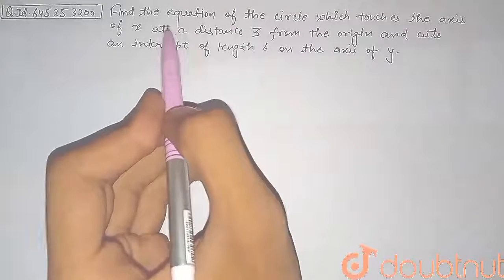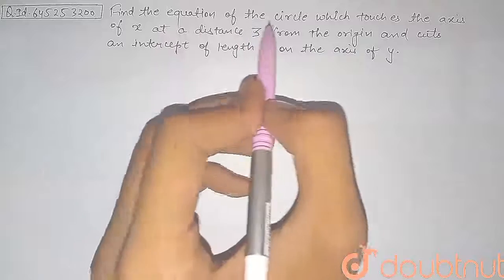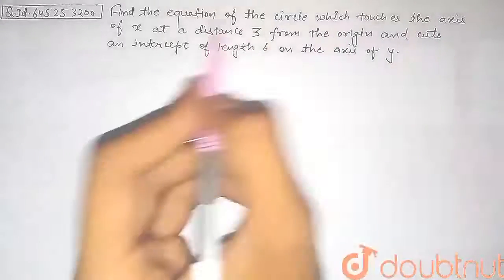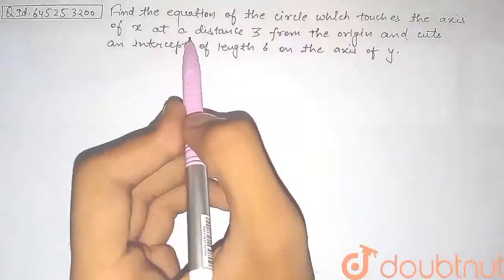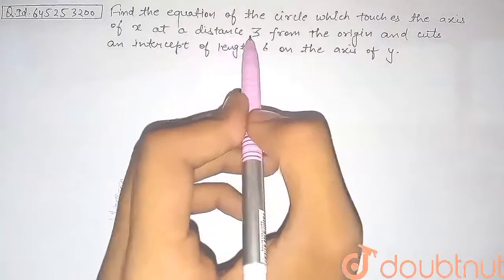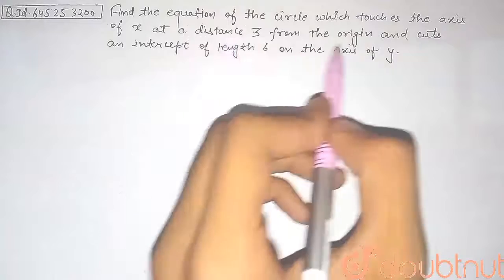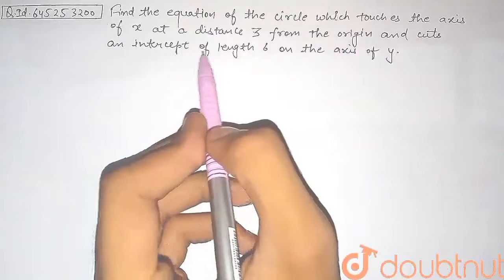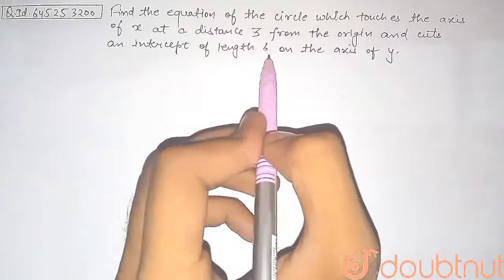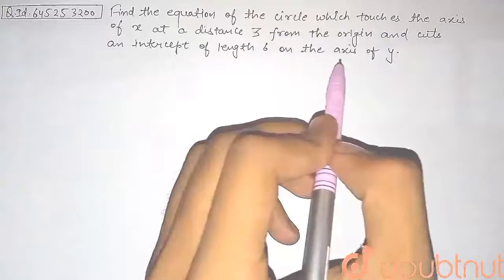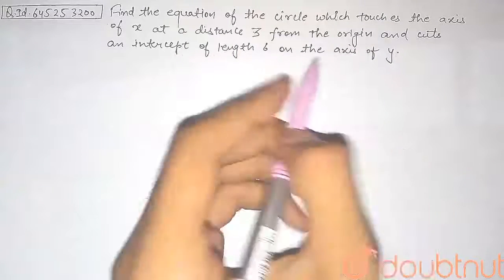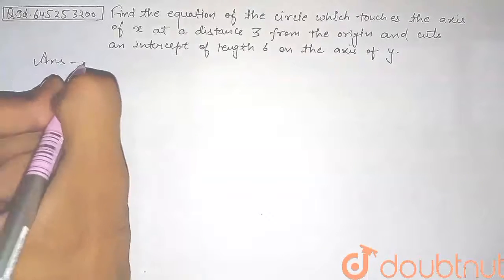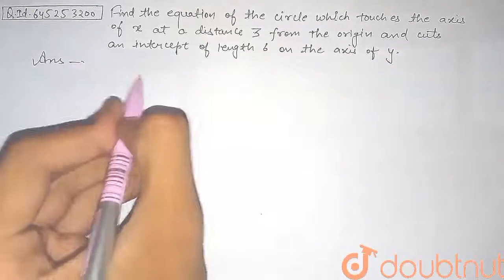Find the equation of the circle which touches the x-axis at a distance of 3 from the origin and cuts an intercept of length 6 on the axis of y. Let's begin with the solution of this question.